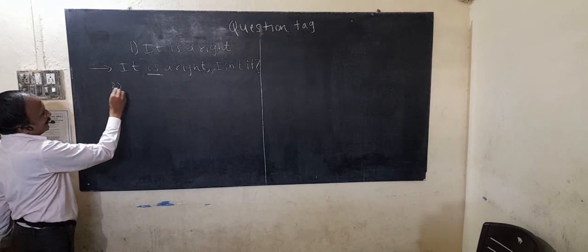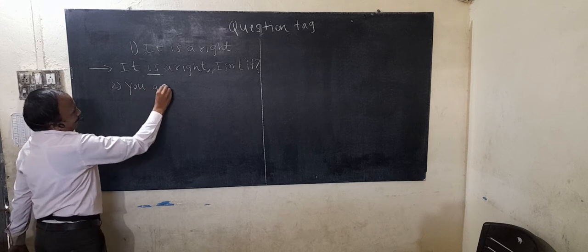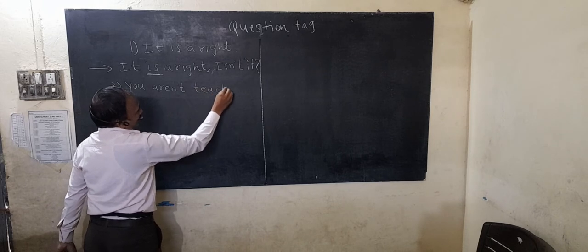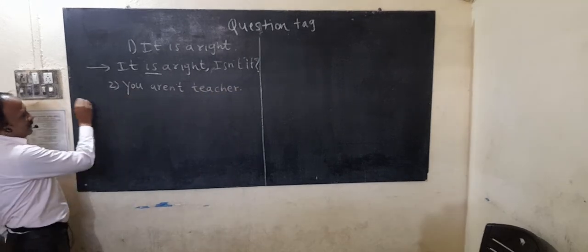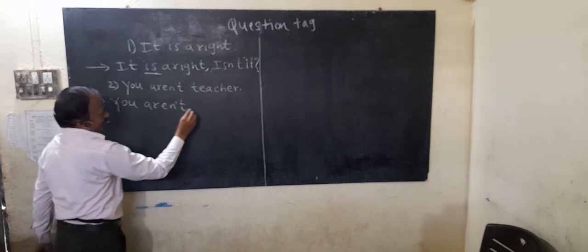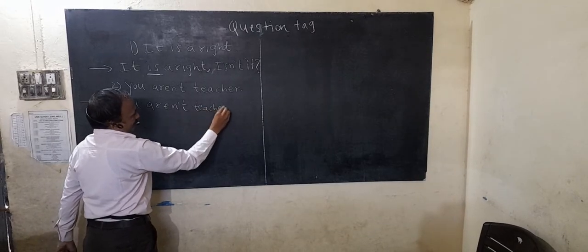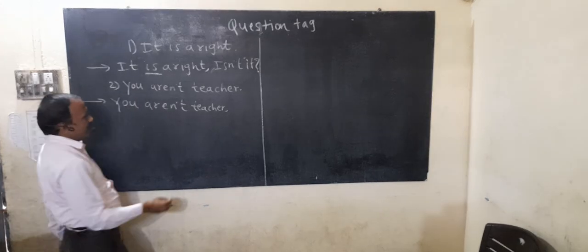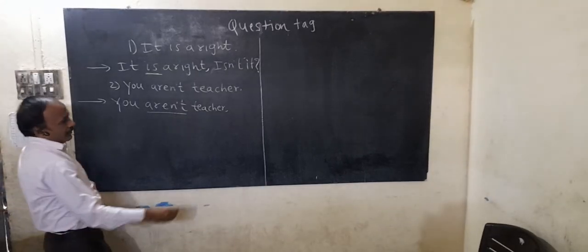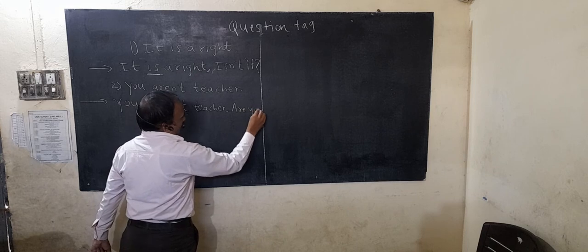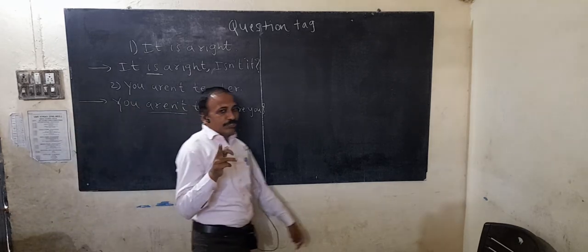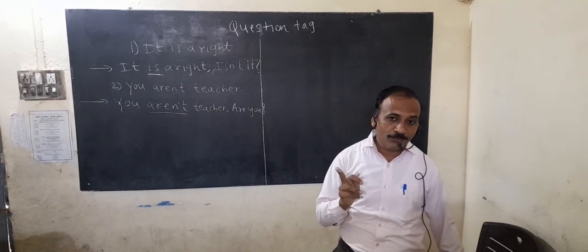Another example: 'You are teacher.' We first write the whole statement, then put a comma. The helping verb here is 'are'. If the statement is positive, the question tag comes negative: 'aren't you?'